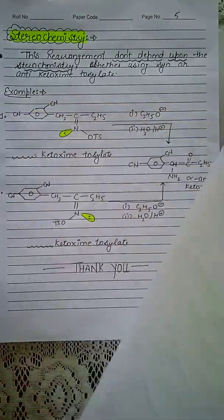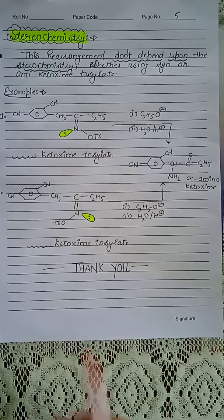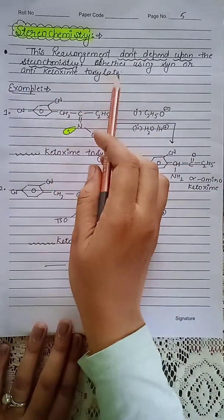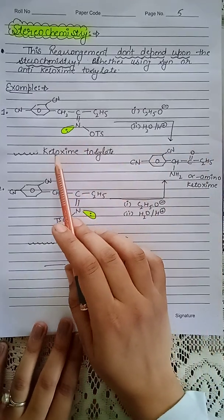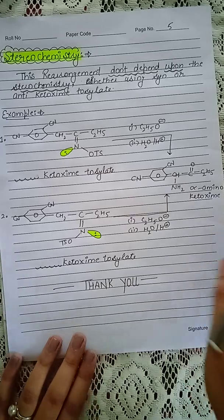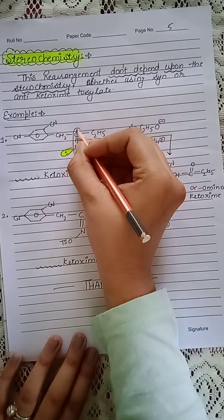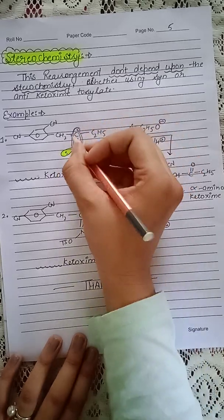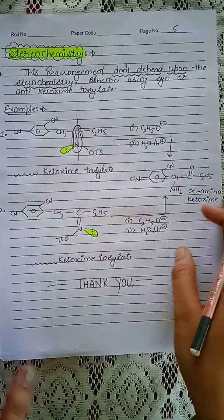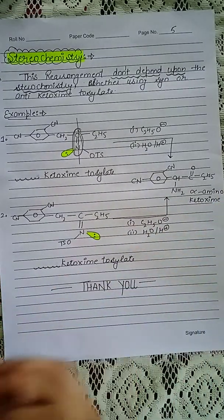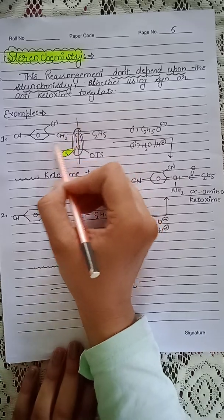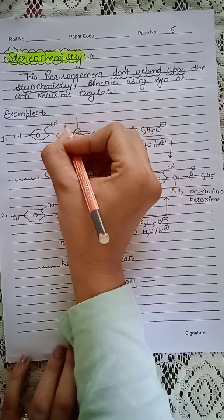Now let us discuss the stereochemistry of the reaction. This rearrangement does not depend upon the stereochemistry — either using syn or anti ketoxime tosylate. We need to decide which is syn and which is anti. To determine this, first cut the C double bond N into two halves, then give priority to the groups present around the C double bond N.